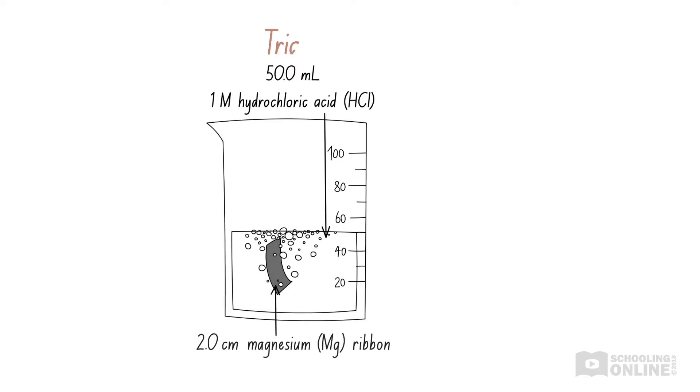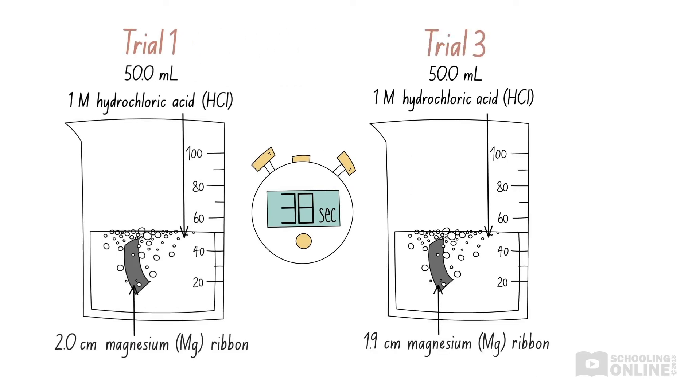When we repeated the experiment, we might have used slightly different amounts of magnesium. In the third trial, we might have accidentally cut 1.9 cm of magnesium ribbon instead of 2 cm. After all, it is quite hard to accurately cut 2 cm if we are using a pair of scissors. If so, the slightly smaller amount of magnesium would have caused the reaction to be completed faster.